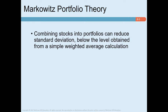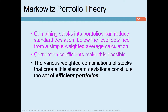Markowitz showed how investors can reduce the standard deviation of a portfolio by choosing stocks whose correlation is less than perfectly positive — stocks that do not move exactly together. He then went on to work out the basic principles of portfolio construction.